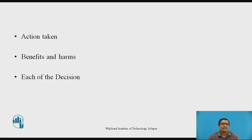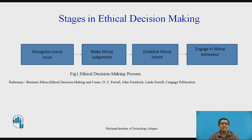Each of the decisions you are taking has an implication for yourself and also for others. There are alternatives available, and through our ethical decision making process we have to choose the best possible alternative given the complexity in which decisions are being taken. This diagram shows ethical decision making processes. There are totally four processes in ethical decision making: the first is recognize moral issues, the second is make moral judgment, the third is establish moral intent, and the last is engage in moral behavior.